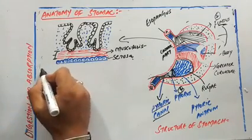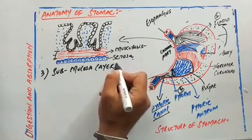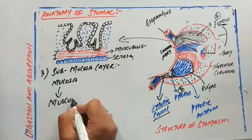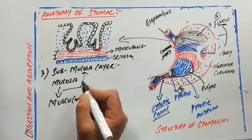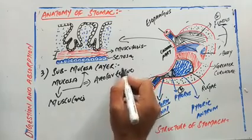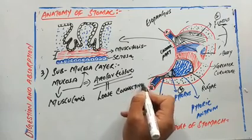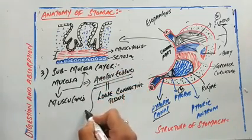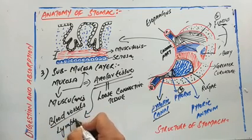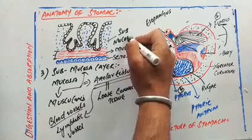The third layer is the submucosa layer, which occurs between the mucosa and the muscular layer. It is mainly made up of areolar tissue, which is a loose connective tissue, and is highly supplied with blood vessels and lymphatic vessels.